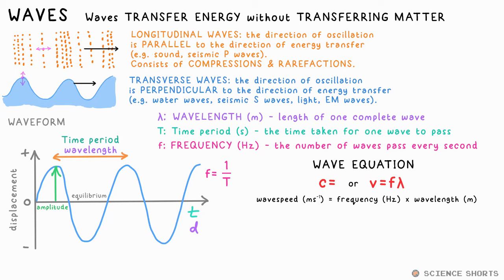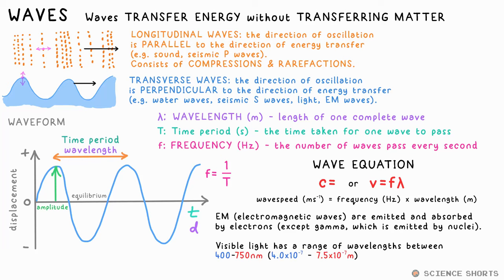The wave equation is this: v equals f lambda. That's wave speed equals frequency times wavelength. It's worth remembering that visible light wavelengths vary from around 400 to 750 nanometers, or 4 to 7.5 times 10 to the minus 7 meters, with red light having the longest wavelength and blue the shortest.